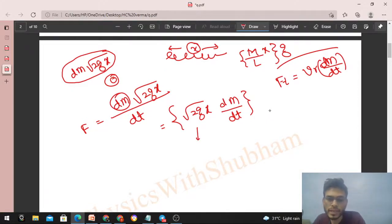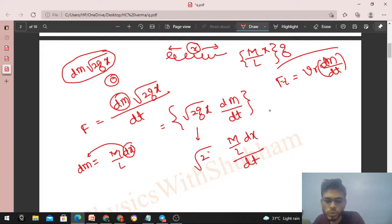Anyway, so aap dhekho abhi hum na let's keep it simple, isi form me solve karate hai. Under root 2gx into dm by dt. Now dm by dt kaise niko? What is dm? dm is nothing but mass of dx. So mass per unit length into dx. Mass of dx length of the chain is dm. So dm ko aap M by L into dx laik sakti ho. So M by L into dx upon dt into under root 2gx.